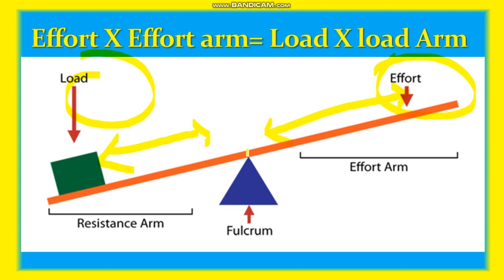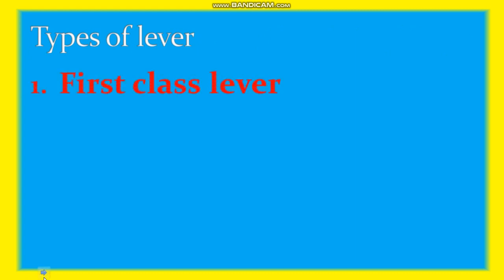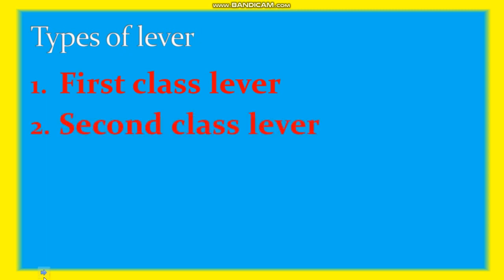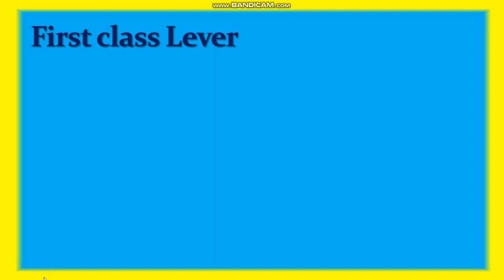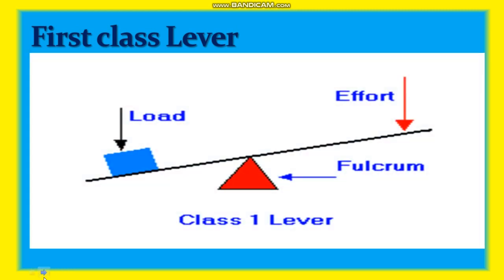We will now see the types of lever. There is first class lever, second class lever, and third class lever. Based on the position of the fulcrum, load, and effort, levers are divided into three classes. In the first class lever, the fulcrum is at the center, effort is at one side, and load is at the other side.